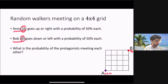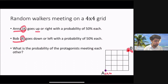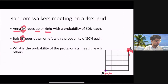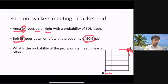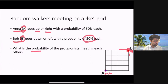Anna starts from point A and Bob starts from point B. Anna can either go up or right with a probability of 50% each. Similarly, Bob can either go down or left, again with a probability of 50% each. The puzzle is: what is the probability of the two protagonists meeting each other?